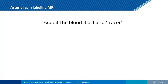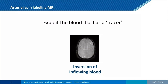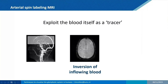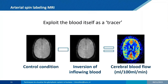In ASL, you first invert the spins in the blood in the neck area, then acquire an image. Because there are many static spins, you also acquire a control image, and by subtracting the two you get something related to blood perfusion. That's the standard technique.